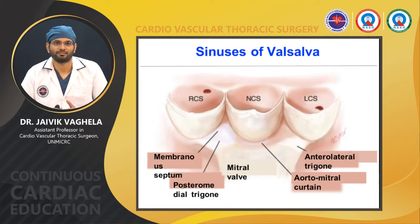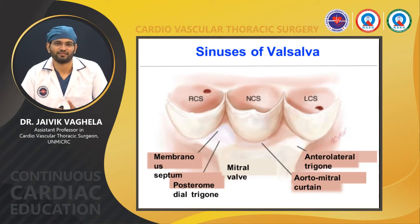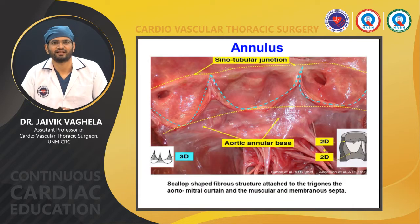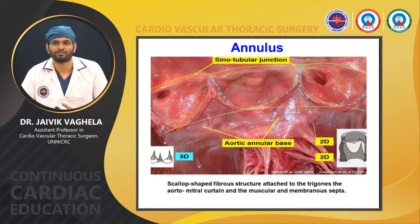Below the leaflets there are the right and left fibrous trigons. Along with the membranous septum, they give rise to the central fibrous body, which is very important because the AV node lies there, from where the bundle of His passes. Between the non-coronary cusp and the left coronary cusp there is an aortomitral curtain, below which lies part of the mitral valve. The yellow line defines the sinotubular junction, and the lowest portion seen is the virtual aortic annulus.